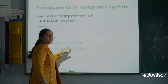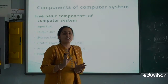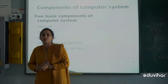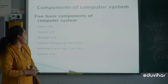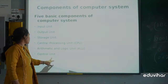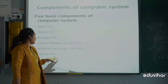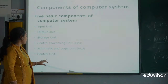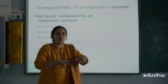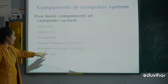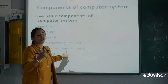The central processing unit is the brain of the computer system. It has two parts: first is the ALU, which stands for Arithmetic Logic Unit, and CU, which stands for Control Unit. The control unit is the nervous system of the computer system because it controls the overall operation of the computer. The arithmetic logic unit performs all automatic calculations.